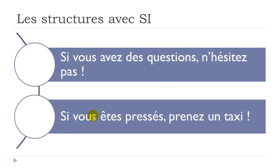Second example: SI VOUS ÊTES PRESSÉ — ÊTRE is to be, PRESSÉ means in a hurry — PRENEZ UN TAXI. PRENDRE is to take, UN TAXI is a cab. SI VOUS ÊTES PRESSÉ, PRENEZ UN TAXI. Remember: SI plus present form, followed by L'IMPÉRATIF. So to express possibility, you have either SI + présent + futur, or SI + présent + impératif.